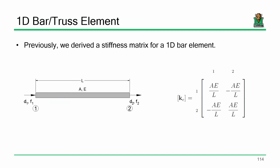Let me explain what I mean by coordinate transformation. Here is the fundamental stiffness matrix for a bar element. How many degrees of freedom have we identified at each joint? Just one — we have horizontal displacement at each end. So the element in total has two degrees of freedom, and the stiffness matrix is two by two.